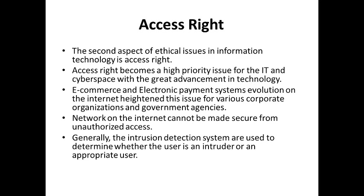Generally, intrusion detection systems (IDS) are used to determine whether a user is an intruder or an appropriate user. There is also something called an intrusion prevention system (IPS). The IDS detects unauthorized users, whereas the IPS will not allow unauthorized access to enter the system at all. Detection and prevention are two different things — prevention will not allow access from any instance, while detection might allow it at some instance but will try to avoid it. With IPS, the chances of being attacked are very low.